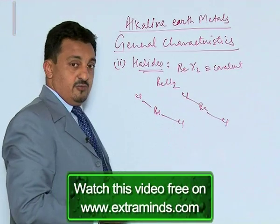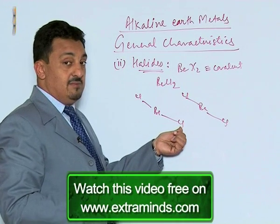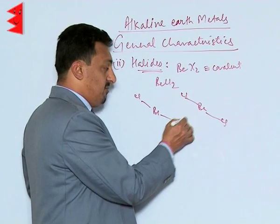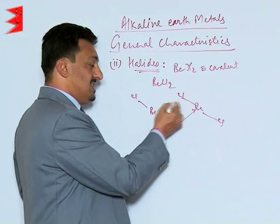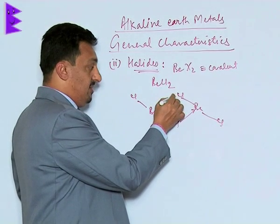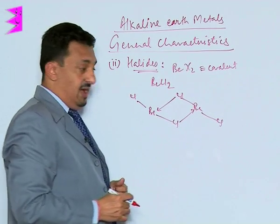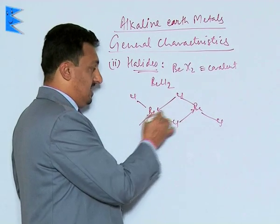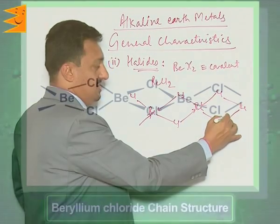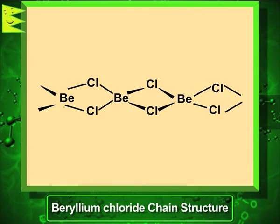It forms bridge bonding from the chloride atoms of the neighboring beryllium chloride species. Since chlorine has a lone pair, it donates one lone pair to the beryllium, and in turn the chlorine of the other molecular species donates its lone pair to the other beryllium. This is how they compensate their electron deficiency and form bridge structures, existing in the solid state.